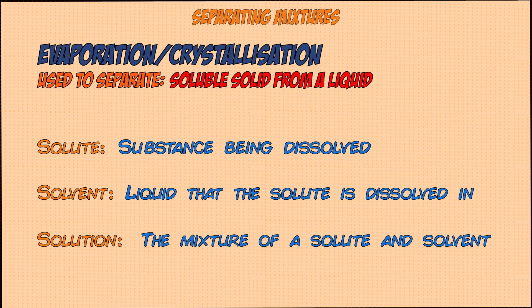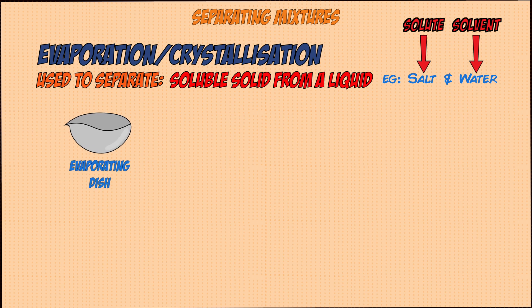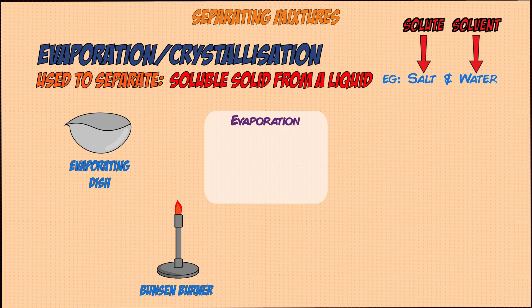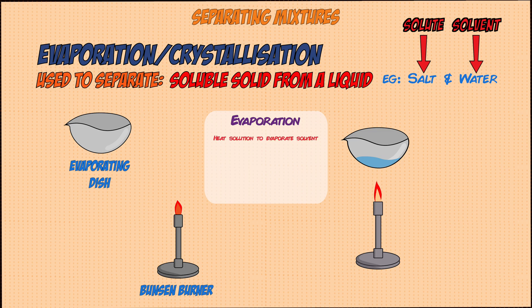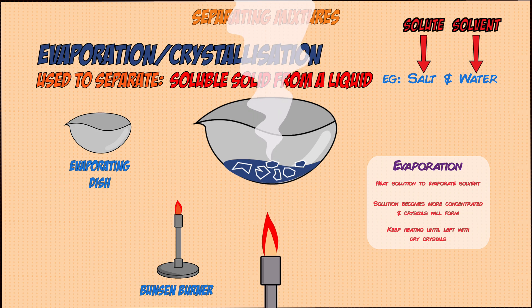Together the solute and solvent are known as a solution. An example would be sea water, where the solute is salt dissolved in the solvent water. The equipment you'll need is an evaporating dish and a Bunsen burner. For evaporation, pour the solution into an evaporating dish and slowly heat it — the solvent water will start to evaporate and the solution will start to get more concentrated.